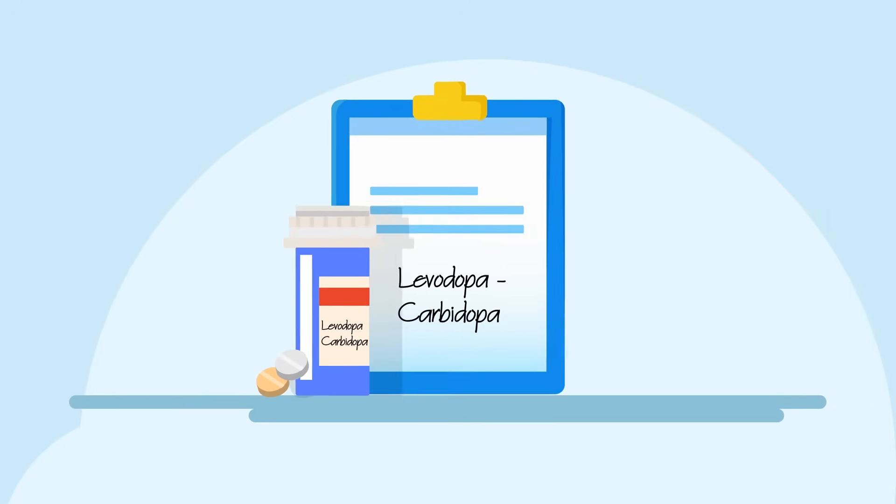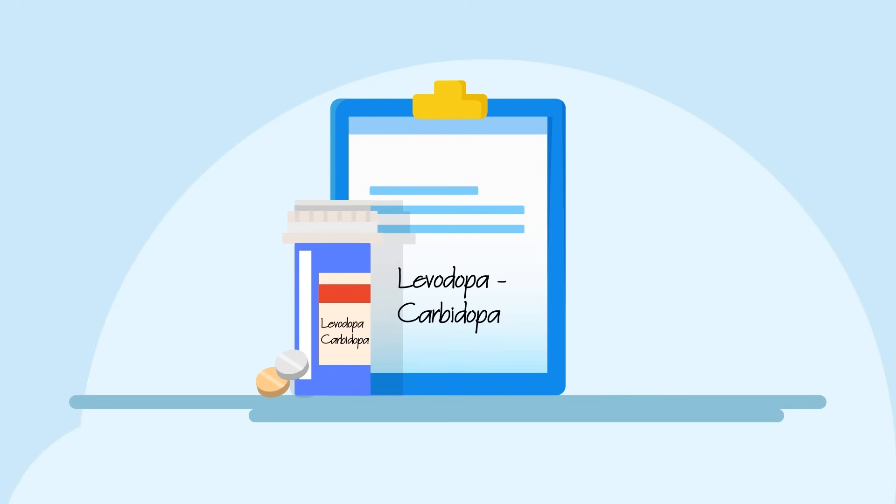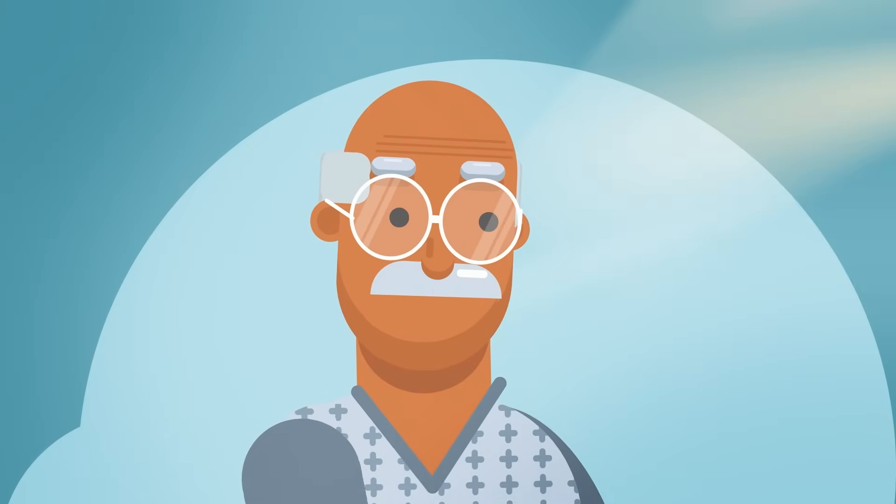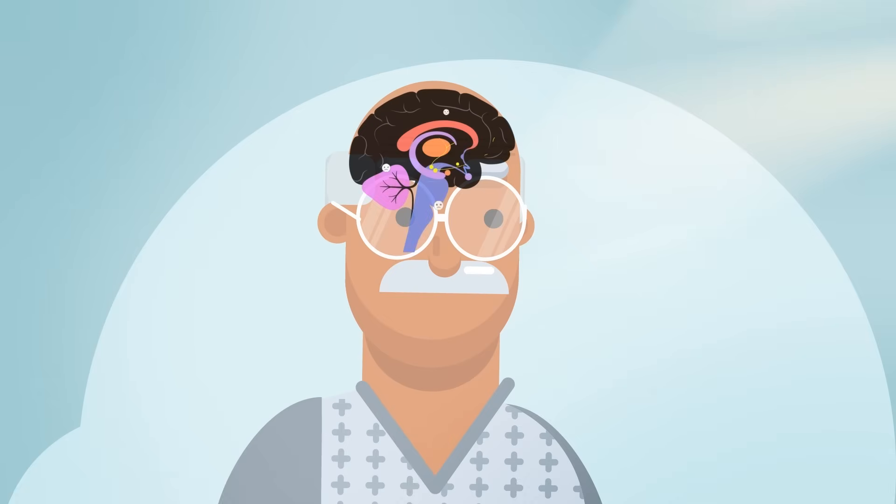Almost everyone with Parkinson's disease will be prescribed Levodopa Carbidopa. When the drug enters your brain, this drug is converted to dopamine, replacing some of the disease-caused lost dopamine.